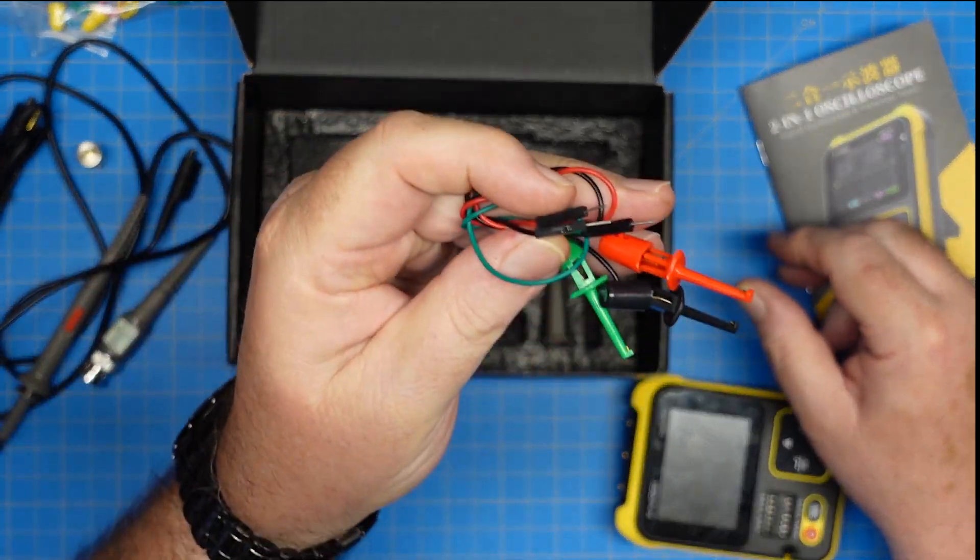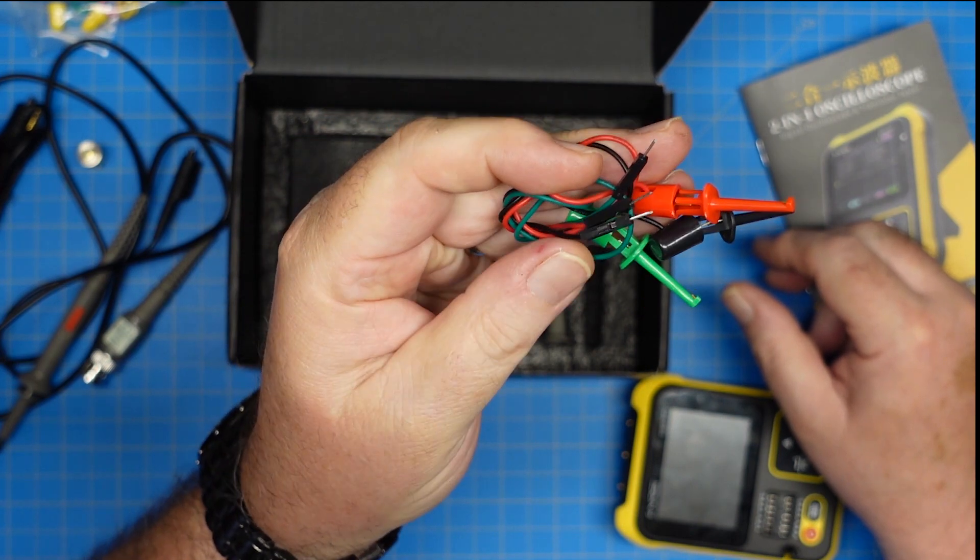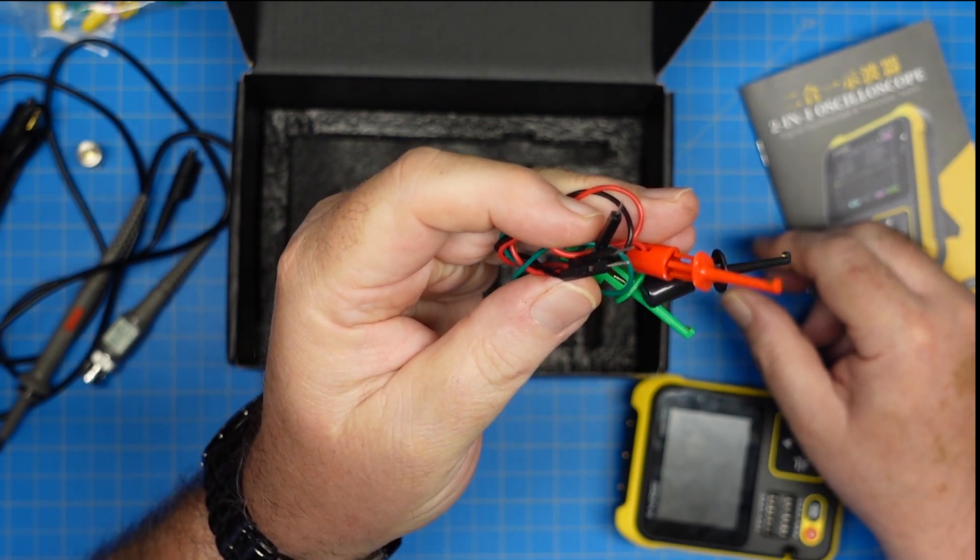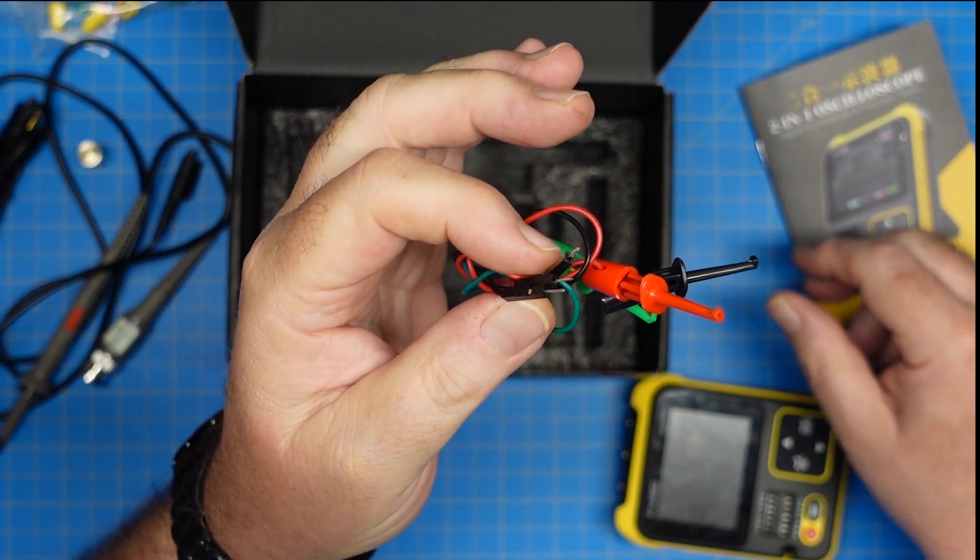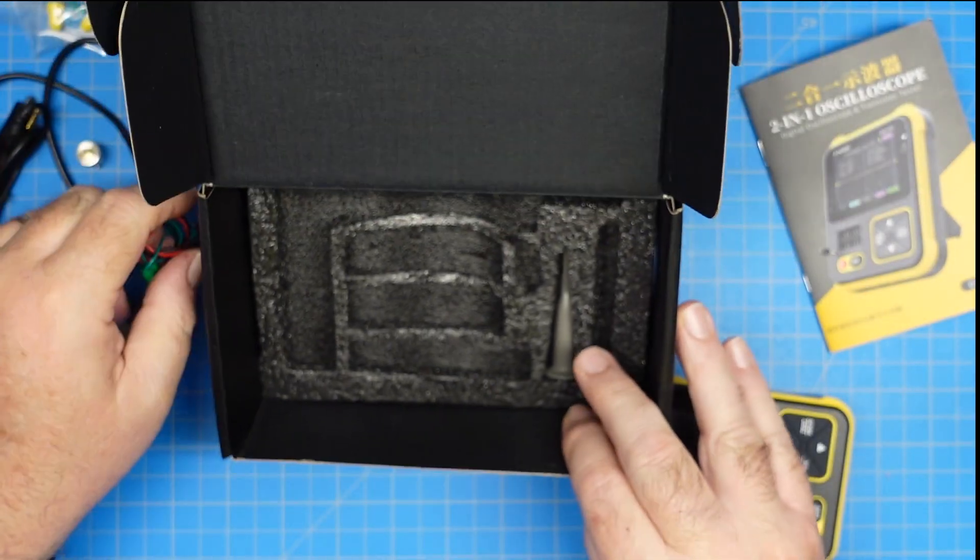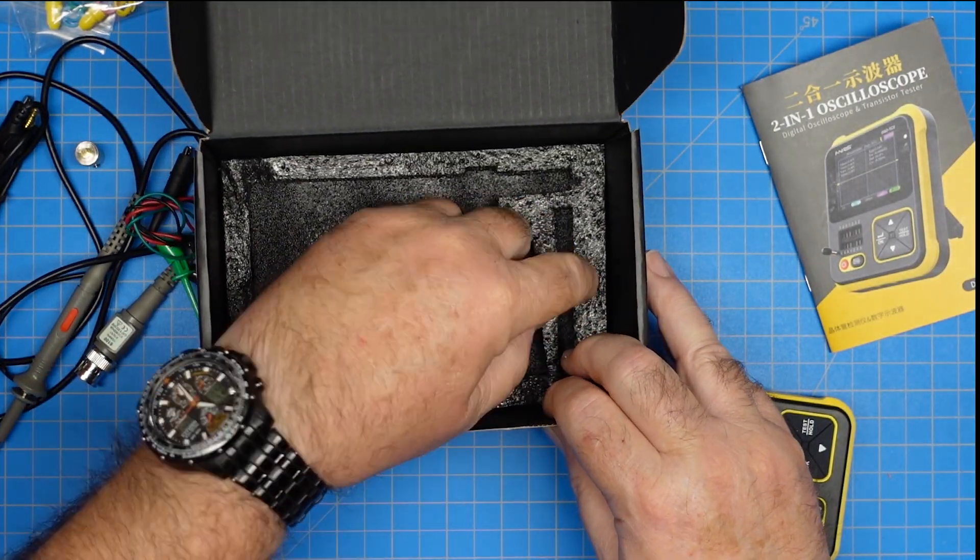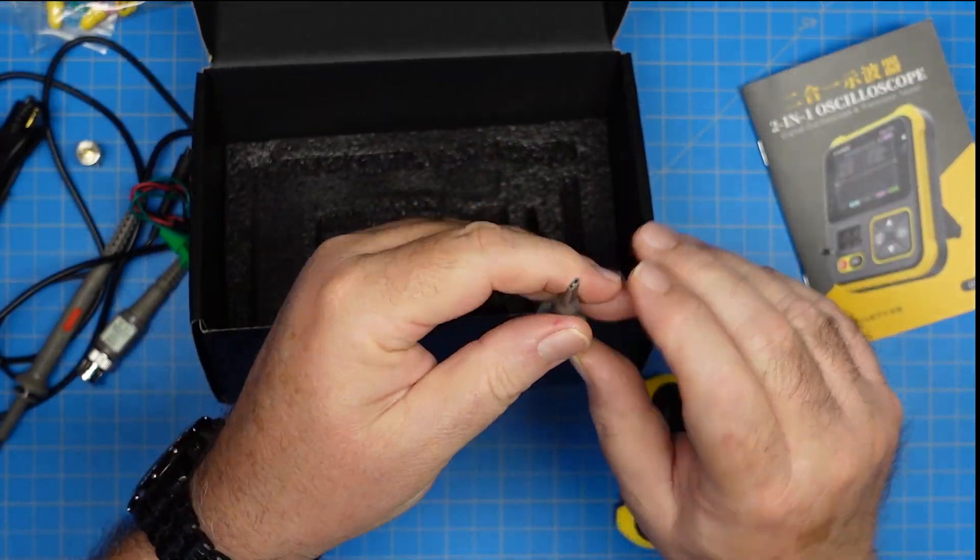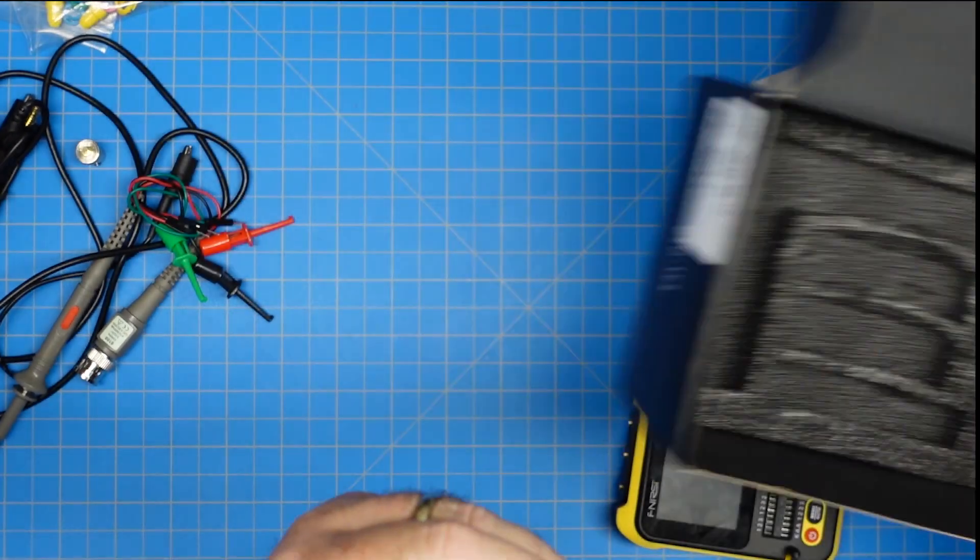And then it also comes with three grabbers, red, green, and black, with DuPont pins on the end, and you would use those for the voltage test functions. It comes with the hook end for our oscilloscope probe. That would go over the end of the oscilloscope probe. And now instead of a point, we have a hook end.